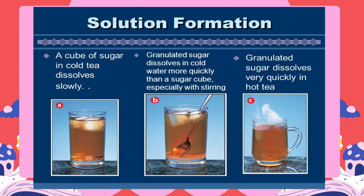When granulated sugar dissolves faster than a sugar cube, it has to do with surface area. A sugar cube is tightly compacted granulated sugar, meaning it has less surface area exposed to the solvent. Granulated sugar has a significantly higher surface area exposed to the solvent, allowing it to dissolve faster.